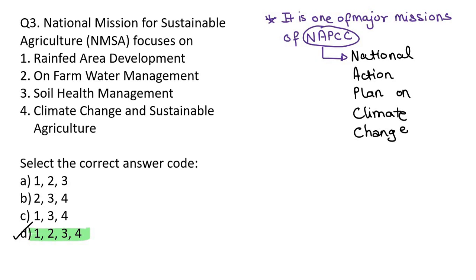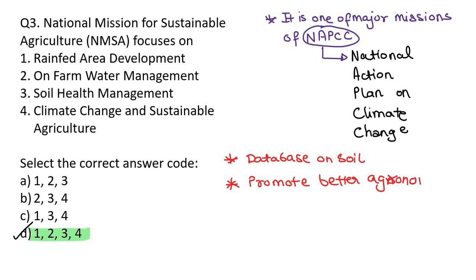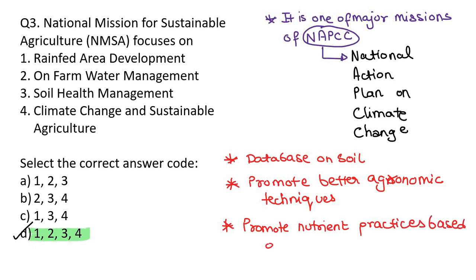Steps under this program would be taken to promote a combined system of farming covering varieties of crops, livestock farming, and fisheries to mitigate risks associated with crop failure. A database will be prepared on soil quality, and it will also promote better agronomic techniques and nutrient practices based on location and crop type for enhancing soil health, increasing crop productivity, and protecting land and water resources.